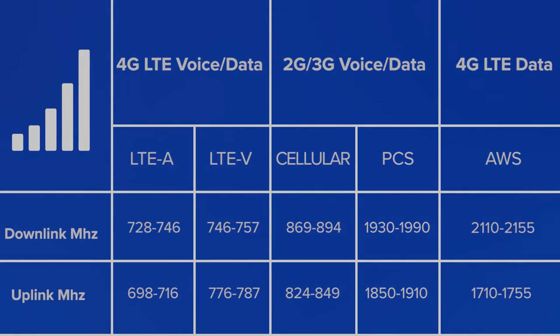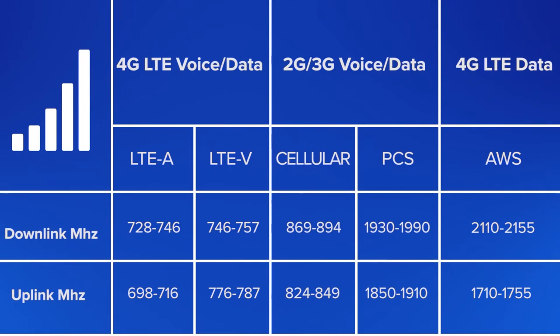but to a lesser degree. LTE, or 700 MHz, and AWS, or 2100 MHz bands are usually used for 4G data. Some carriers are doing voice over AWS, which our amplifiers will support as well.